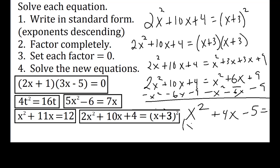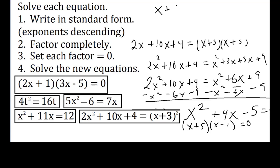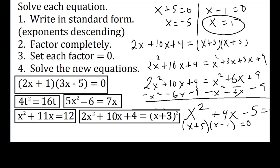Factoring x² + 4x - 5 gives (x + 5)(x - 1) = 0. Setting each factor equal to zero: x + 5 = 0 gives x = -5, and x - 1 = 0 gives x = 1. Those are my two solutions for the last example. So make sure before you start to factor that there's a zero on the right-hand side. If it's already zero and already factored, go to step 3. If not, you've got to get everything simplified and onto one side.